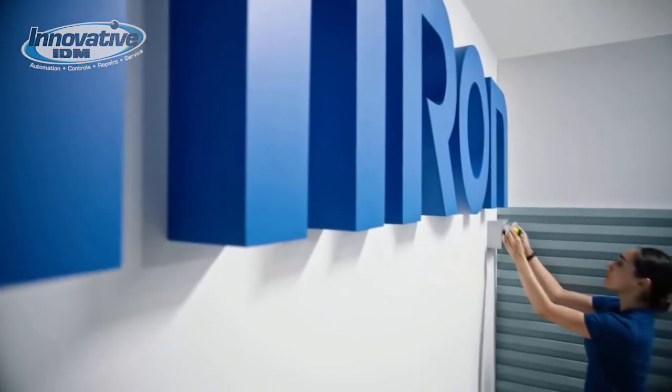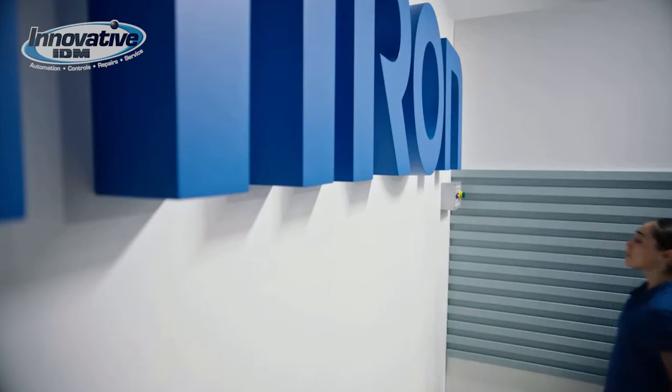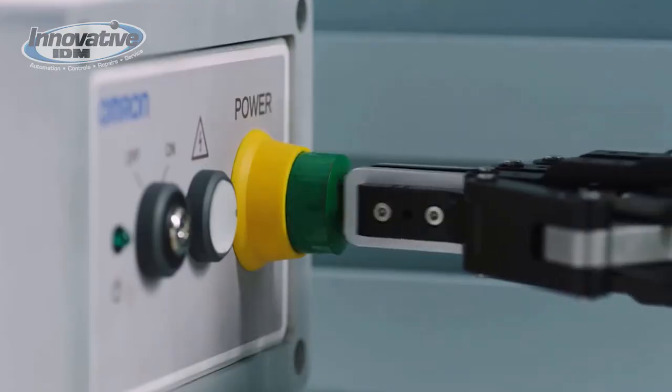The servo gripper you see in some of these videos and next to me is from Roboteek, and Innovative is in fact a partner with Roboteek End Effectors.